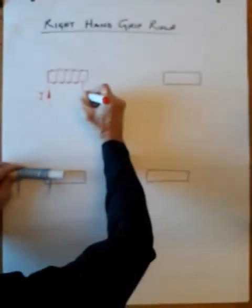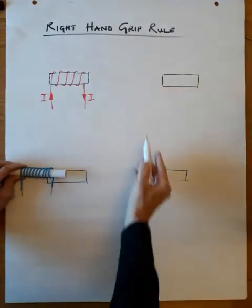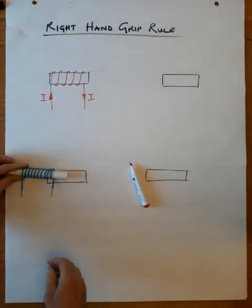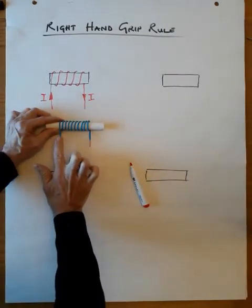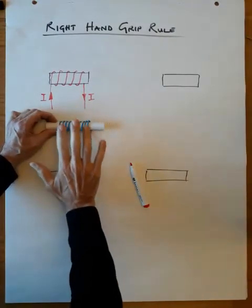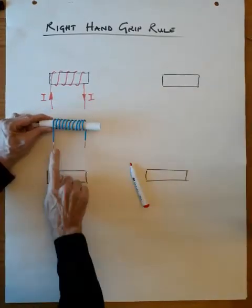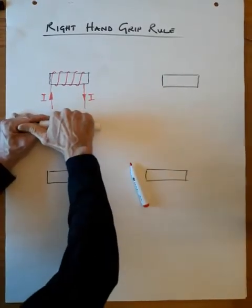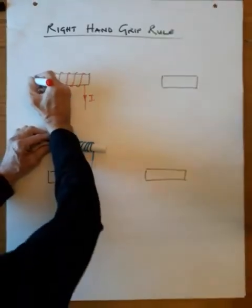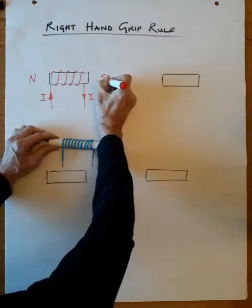So it's going to come out there. We can determine the north pole of the magnet very simply: if you follow this conductor around, use the flat of your right hand and your fingers follow the direction of the current flow like so, and your thumb points north.